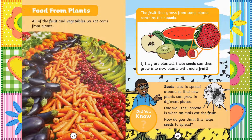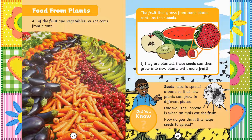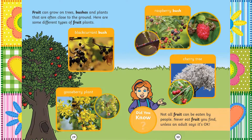Chapter 8: Food from Plants. All of the fruit and vegetables we eat come from plants. The fruit that grows from some plants contains their seeds. If they are planted, these seeds can then grow into new plants with more fruit. Did you know seeds need to spread around so that new plants can grow in different places? One way they spread is when animals eat the fruit. Fruit can grow on trees, bushes, and plants that are often close to the ground. Here are some different types of fruit plants: blackcurrant bush, gooseberry plant, raspberry bush, and the cherry tree. Did you know not all fruit can be eaten by people? Never ever eat fruit you find unless an adult says it's okay.